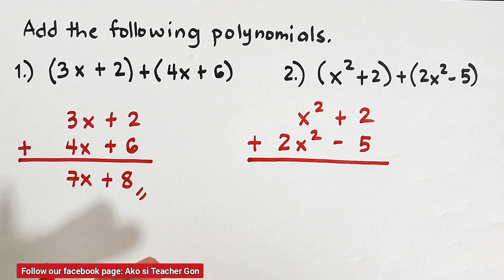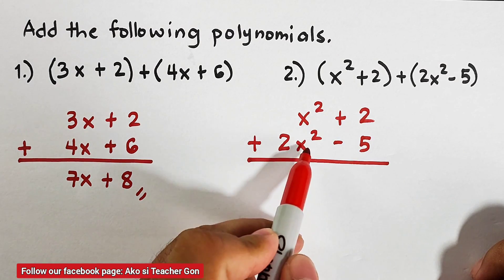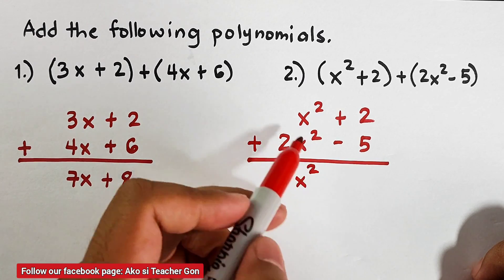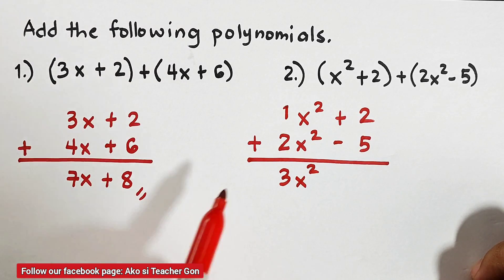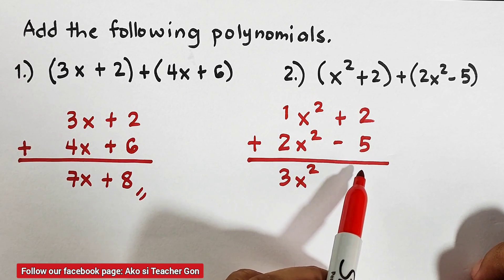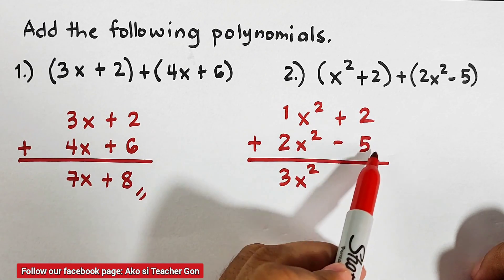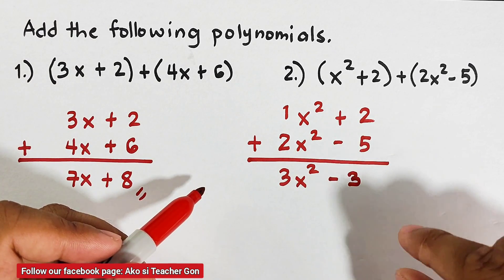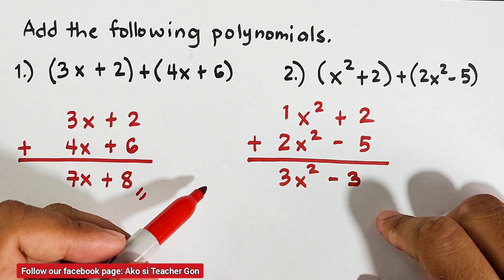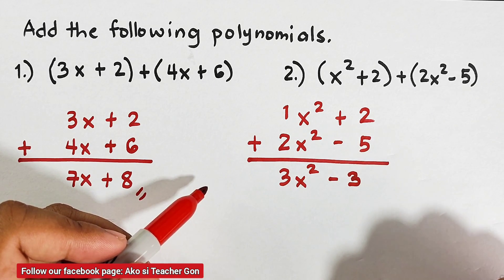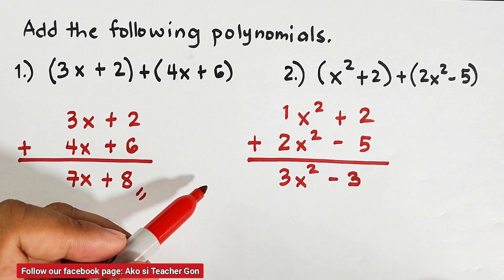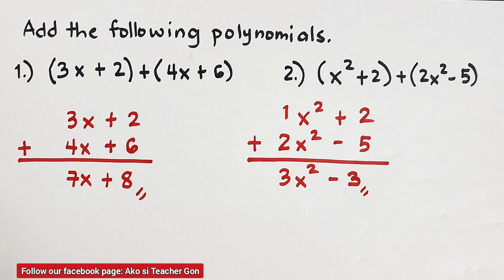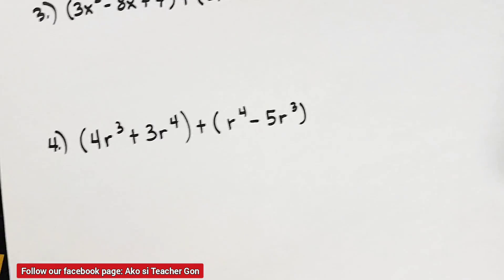When doing addition of polynomials, make sure you master operations on integers because you will be using your knowledge of how to add, subtract, multiply, or divide integers. Here, x² + 2x² = 3x², because x² has a coefficient of 1. Next, 2 + (−5): since the absolute value of 5 is bigger, we subtract — 5 minus 2 is 3 — and we copy the sign of the number with the largest absolute value, giving us −3. So the answer is 3x² − 3.